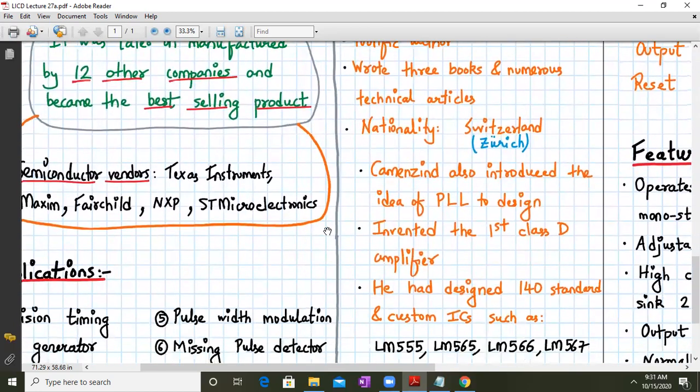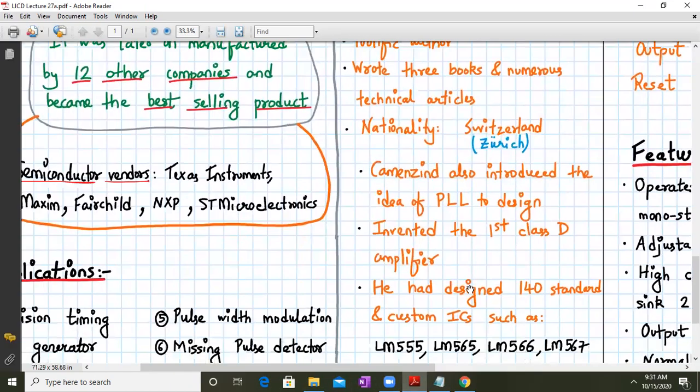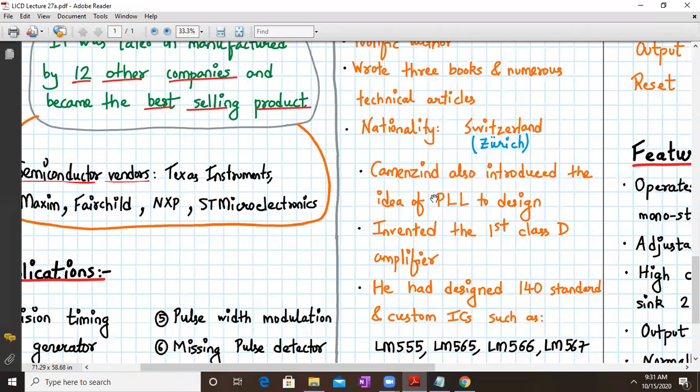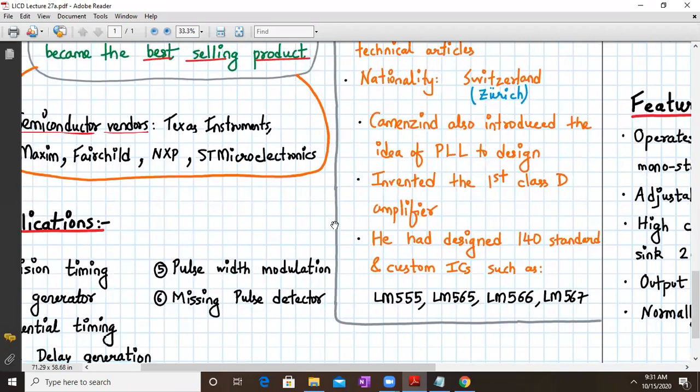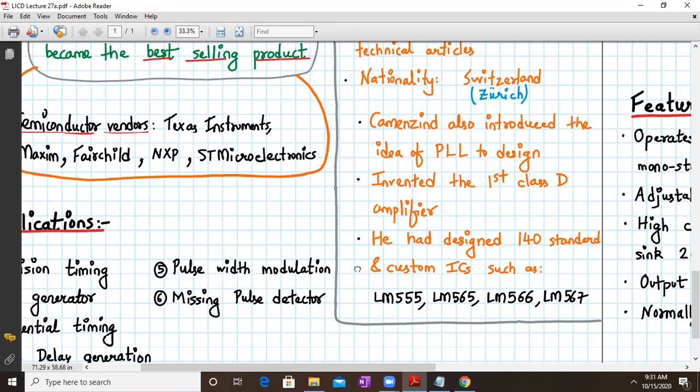So engineer Hans also introduced the idea of PLL to design. So PLL is phase locked loop. So that also we have in our syllabus. So he was the first to introduce the idea of PLL. He invented the first class D amplifier, which are normally used as audio amplifiers. And he has designed over 140 standard and custom ICs such as LM555, LM565, LM566 and LM567.